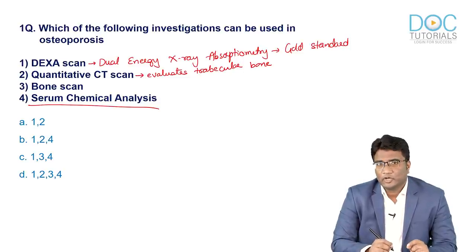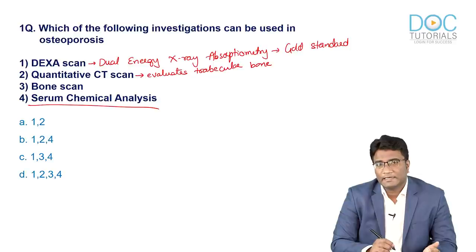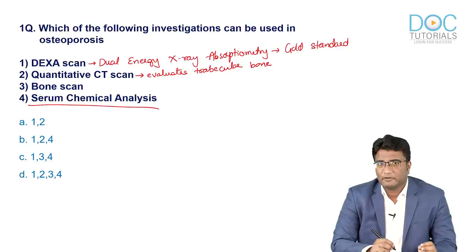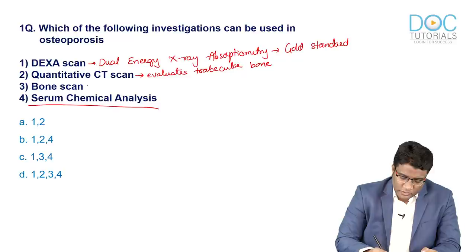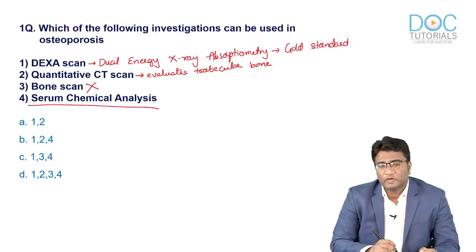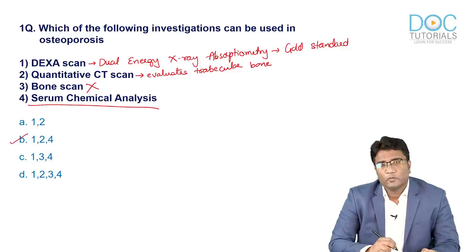Serum biochemical analysis is also routinely done in the evaluation of patients with osteoporosis. In osteoporosis, the serum alkaline phosphatase, serum calcium, and serum phosphate levels are normal. But we still need serum biochemical analysis to rule out other causes of decreased bone mineral density like hyperparathyroidism. So serum alkaline phosphatase, calcium, and phosphate levels should also be obtained.